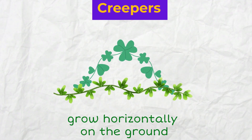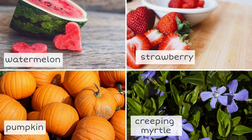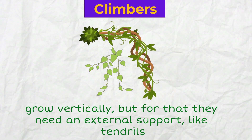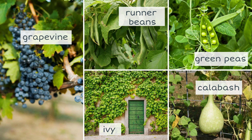Creepers are plants that grow horizontally on the ground. Examples are watermelon, strawberry, pumpkin, and creeping myrtle. Unlike creepers, climbers or climbing plants grow vertically, but for that they need an external support like tendrils. For example, grapevine, runner beans, green peas, ivy, and calabash.